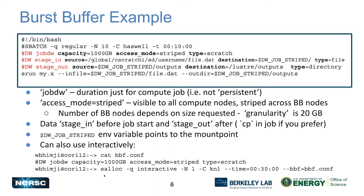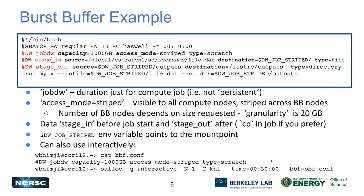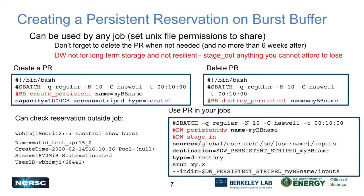As well as running batch jobs, you can also use the burst buffer interactively. This is an example using the interactive queue, where you add the --bbf flag with the directives file, and it will set that up for your interactive job. You can also use a persistent reservation, which is useful even if you don't need it across multiple jobs.